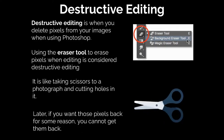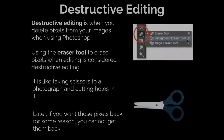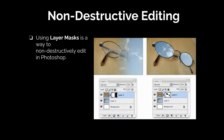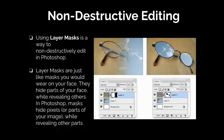It's really important to remember what we're about to get into, which is non-destructive editing. Non-destructive editing is when you are using layer masks as a way to non-destructively edit a photograph. Layer masks are just like masks that you would wear on your face — think of them as hiding parts of your face while revealing others, like the eye holes in a mask so you're able to see. In Photoshop or Photopea, masks hide pixels or parts of your image while allowing us to reveal and show other parts.